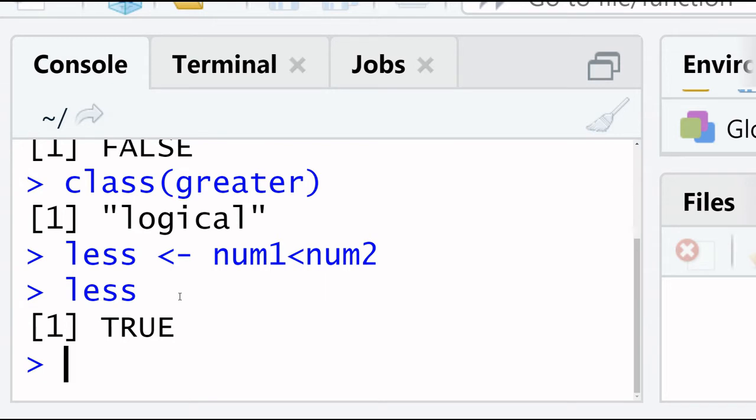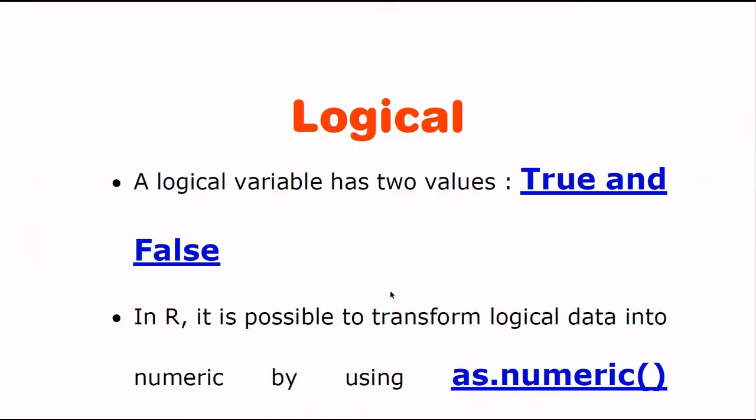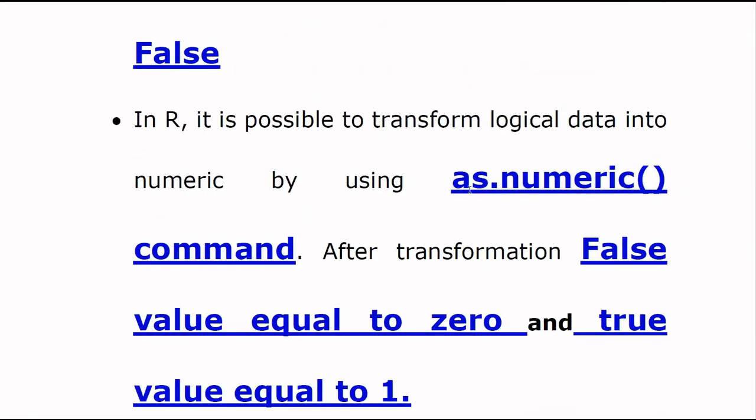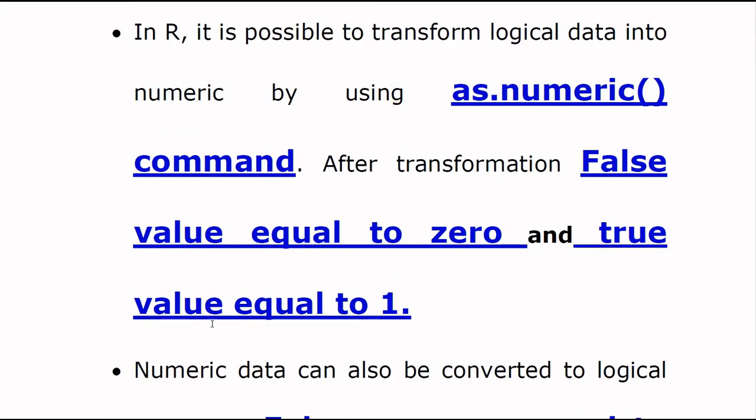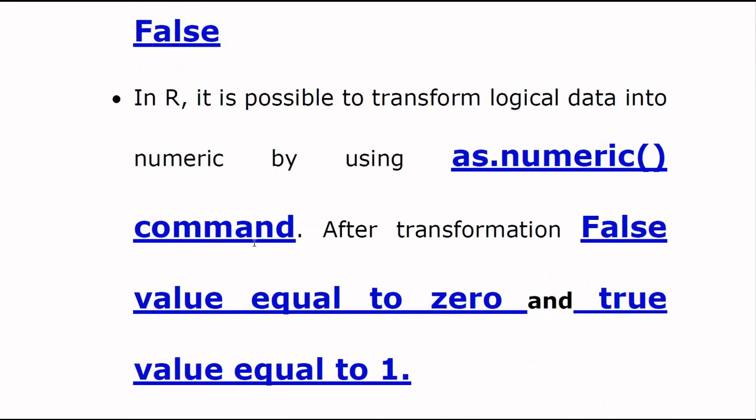In R it is possible to transform logical data into numeric by using as.numeric command. False value equal to 0 and true equal to 1 when we convert into numeric form. So now we perform this step in R.